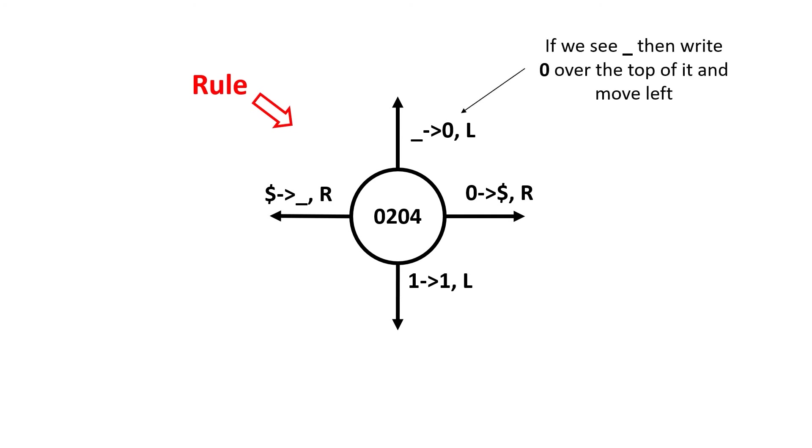So this should read, in rule 204, if I see an underscore, write a zero and move left. And if I see a zero, write the dollar and move right. The final piece of information I need per arc is which rule to move to next. Here if I'm in rule 204 and I see a one on the tape, I write back one, I move left over the tape and go to rule 205.